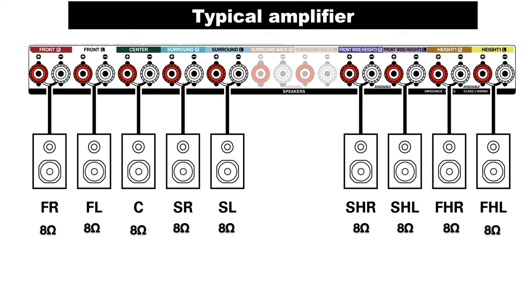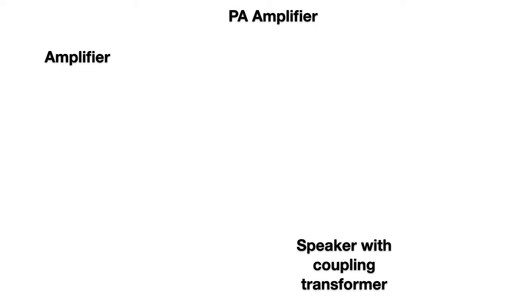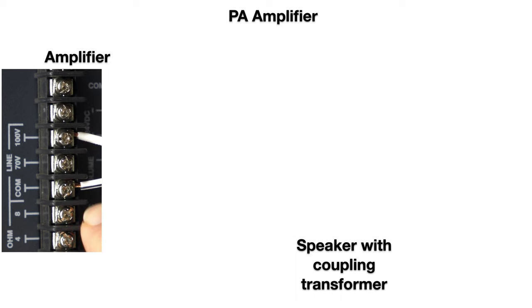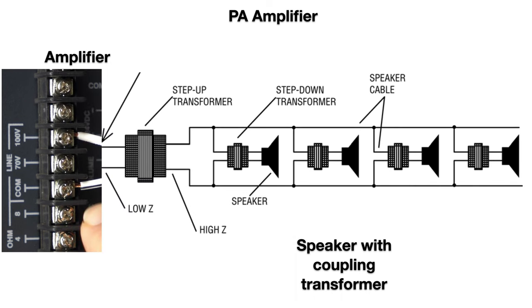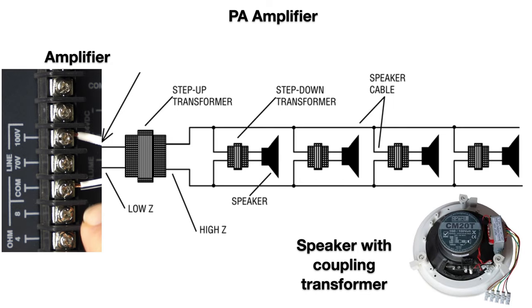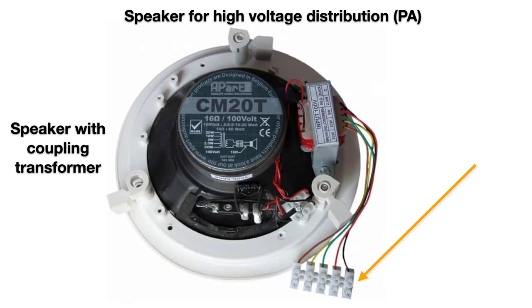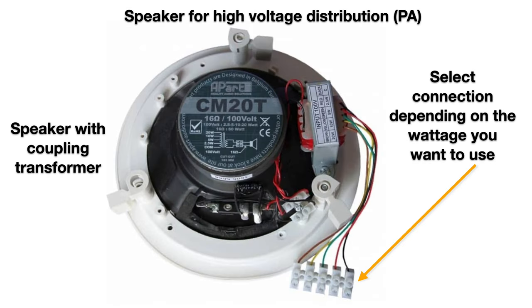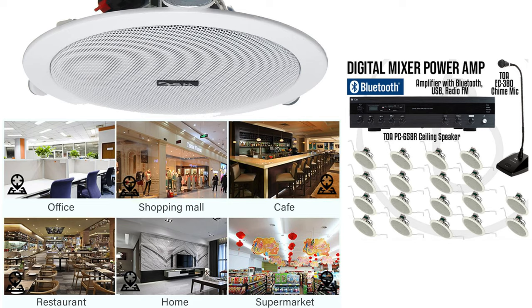With PA speakers it's different. You can put as many speakers as you want in parallel — the limit is much higher than 10 or 20. You don't worry about series wiring or impedance matching, because each speaker has its own transformer. On that transformer you select the input tap for the wattage you want for that particular speaker. That's why these systems are widely used in schools, supermarkets, factories, and large rooms.